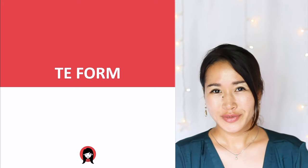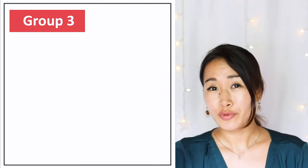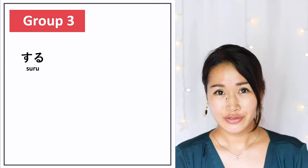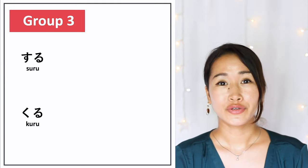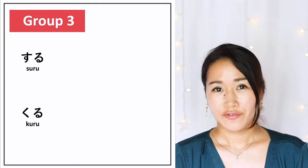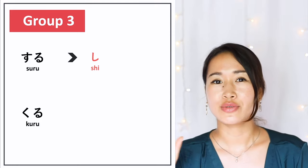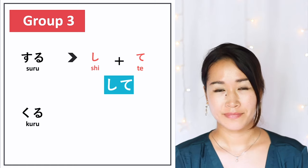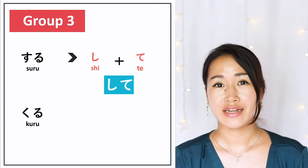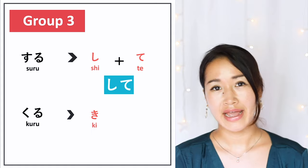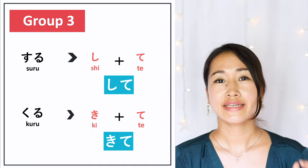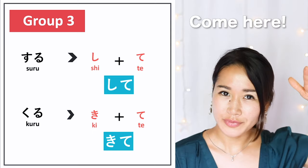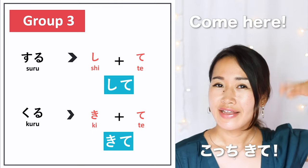Let's move into group 3. There are only two verbs in group 3: 'suru' (to do) and 'kuru' (to come). To make TEFORM, you change 'suru' into 'shi' and add TE, so it becomes 'shite'. And you change 'kuru' into 'ki' and add TE, so it becomes 'kite'. For example, 'come here' would be 'kuchikite'.